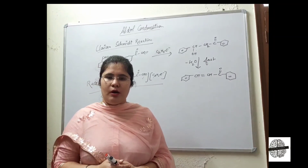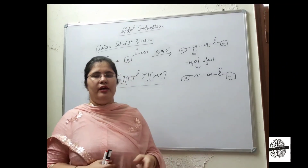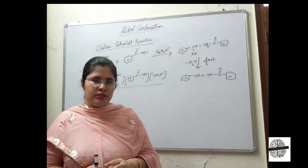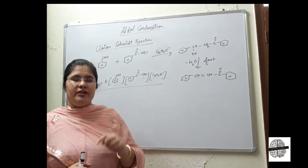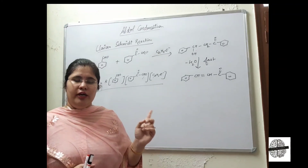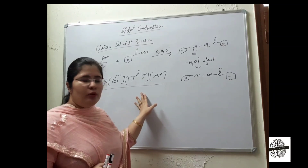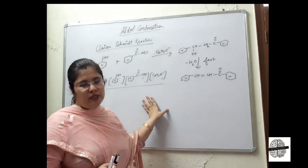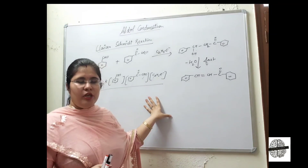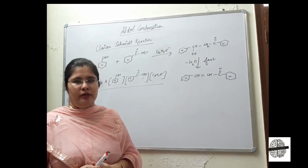Today we discussed aldol condensation between two aldehydes, then between two ketones, then the reaction of acetaldehyde with formaldehyde where the rate is second order. We also covered cross aldol condensation and the Claisen-Schmidt reaction. Thank you, have a nice day, and please don't forget to subscribe to our channel.